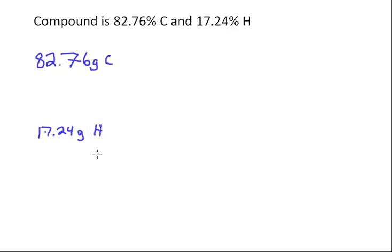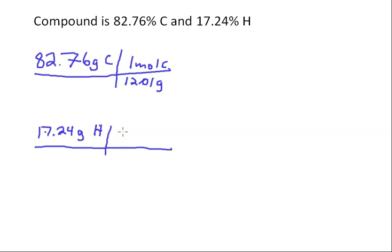Now we just want to do some dimensional analysis. We know that one mole of carbon has a mass of 12.01 grams, and we know one mole of hydrogen has a mass of 1.01 grams. That's a 1.